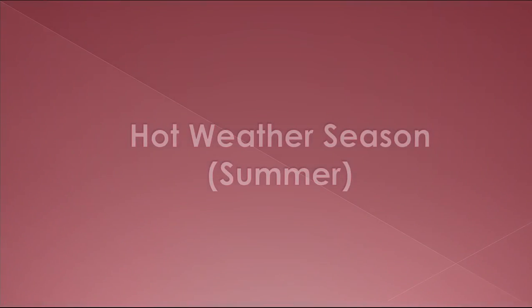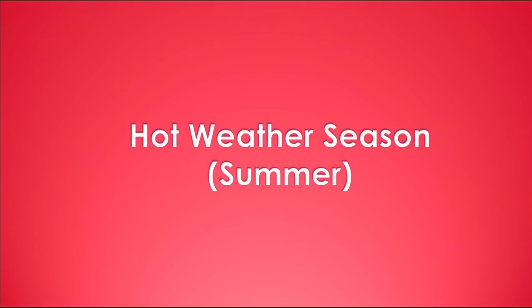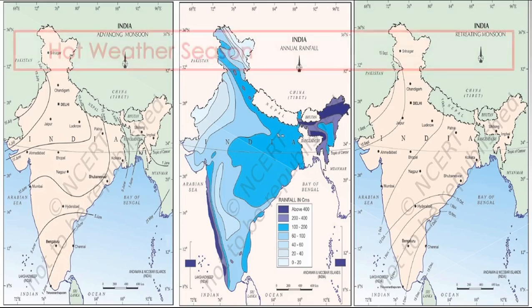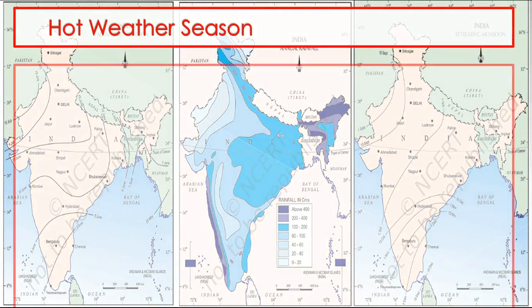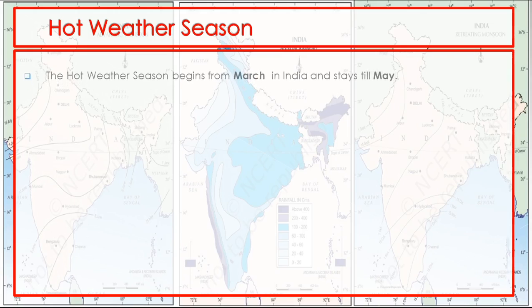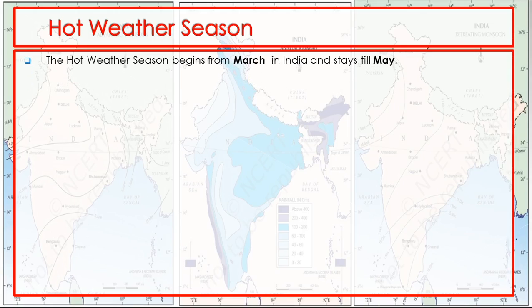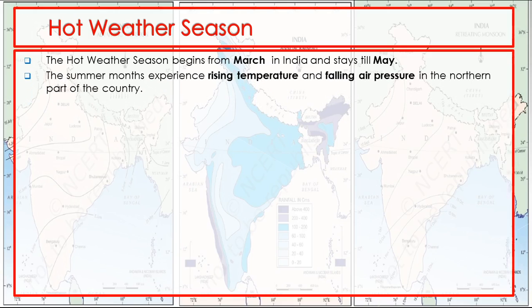Next topic: hot weather season, also known as summer. The hot weather season begins from March in India and lasts till May. The summer months experience rising temperature and falling air pressure in the northern part of the country.